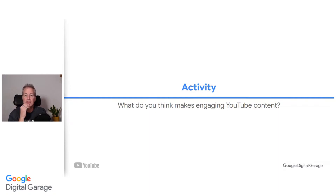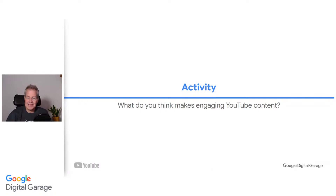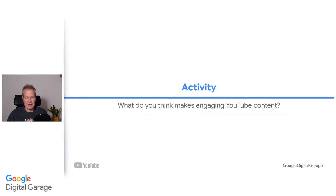Story, authenticity, being real, being yourself — these are so important. It's important that people come across clearly and authentically. When you're communicating and can't see their faces, imagine you're communicating to someone really important to you — that often brings out the best communication in you. It doesn't matter that it's a lot more people; you have that personal element that you're bringing across.